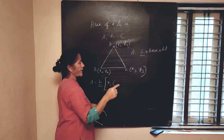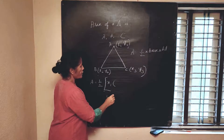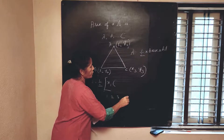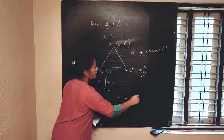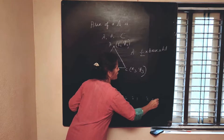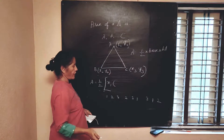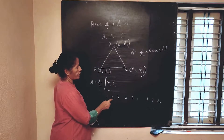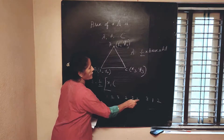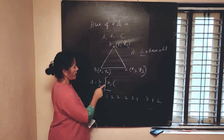It goes in cyclic order: 1, 2, 3 then 2, 3, 1 then 3, 1, 2. It is called cyclical order.